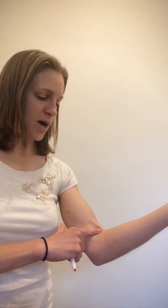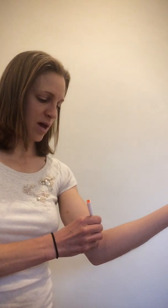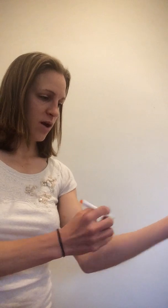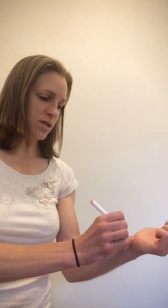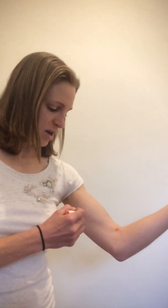At the elbow, I know my median nerve is going to be medial to the biceps tendon, so if I can find the biceps tendon and drop just medial to that, median nerve is going to be located there. And then I know at the wrist, it's going to cross the wrist at the carpal tunnel.